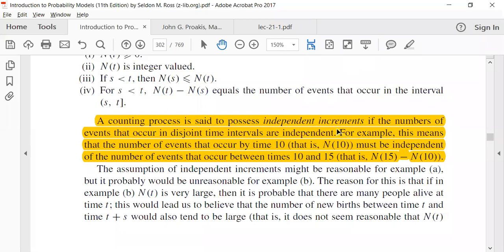So independent increments is that number of events that occur by time 10 is independent of the number of events that occur between 10 and 15. So you have two disjoint intervals - one goes from zero to 10 and the other goes from 10 to 15. So the number of events between them is independent, and if it is true, then you can say that that counting process has independent increments, but it's not necessary. It is not necessary that every counting process has independent increments, but there might be some processes where you have independent increments.